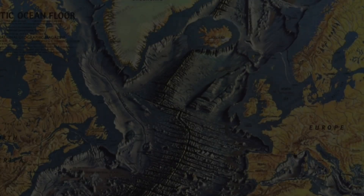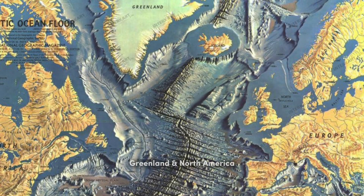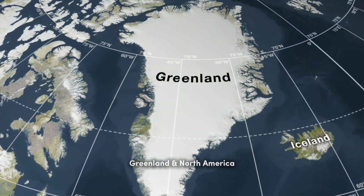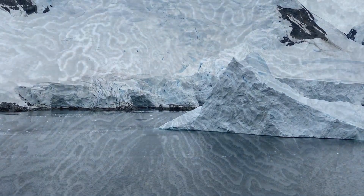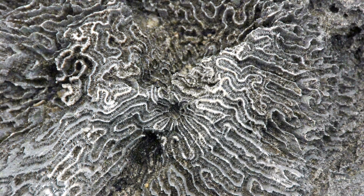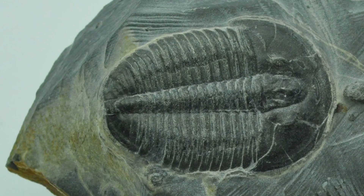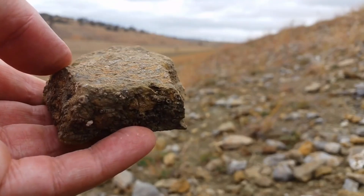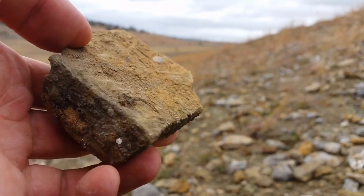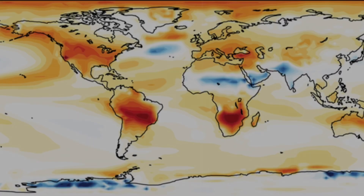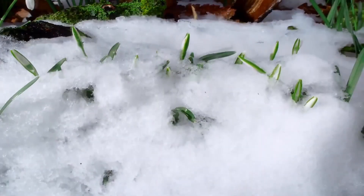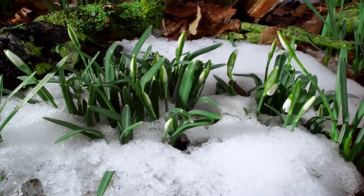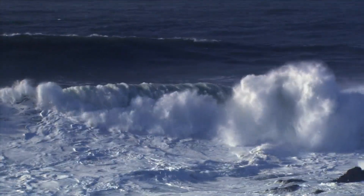Another interesting fit is Greenland and North America. Before the opening of the North Atlantic Ocean, Greenland was connected to North America, and their coastlines and geological features suggest a shared history. Fossil evidence also supports this connection: fossils of ancient plants and animals found in rocks of similar ages on both landmasses suggest they were once part of the same terrestrial environment. Glacial deposits from past ice ages found in both regions indicate they were once situated near the Arctic Circle and experienced similar cold climates.